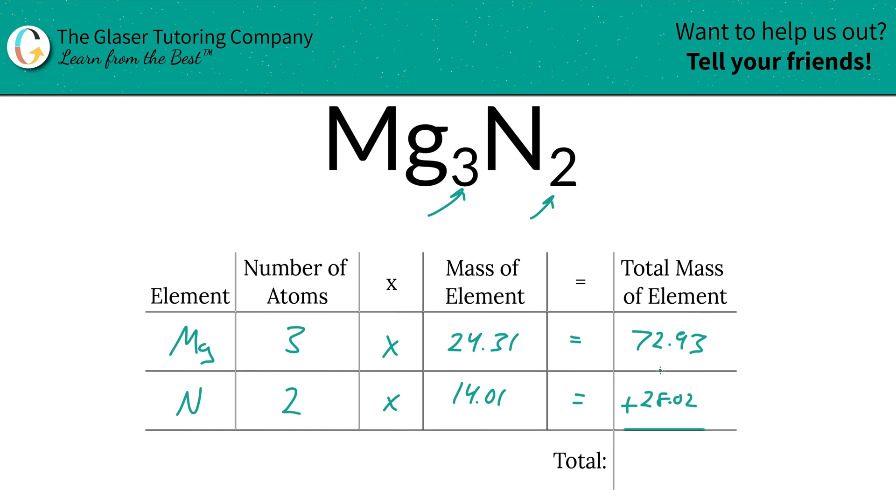And then to find the total mass of the entire compound, just add up this column. So it's 100.95. And there you have it.